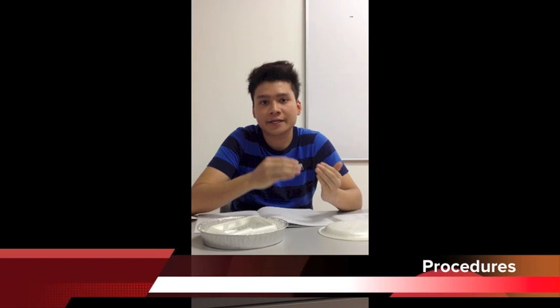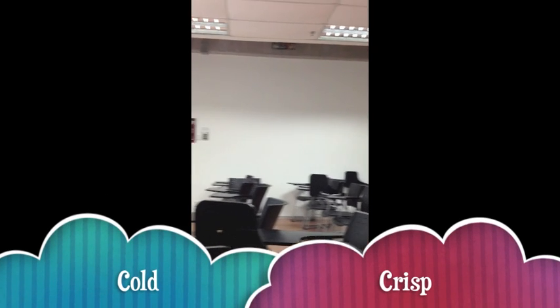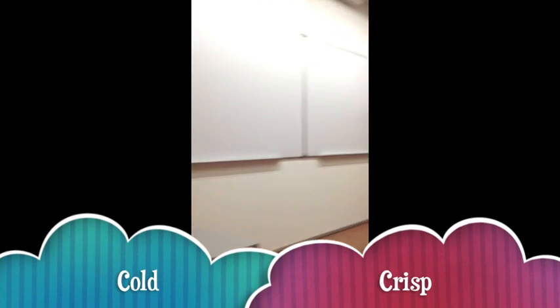To start off the experiment, we have to make sure that we are in a cold and dry area. As you can see, we are in an empty classroom with the air conditioning on. We need to make sure it is cold and not hot and humid, because humidity is the number one enemy of static electricity.